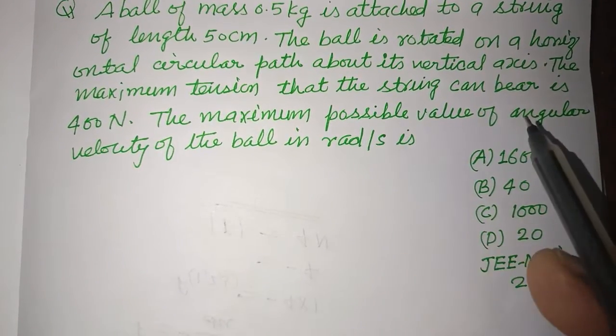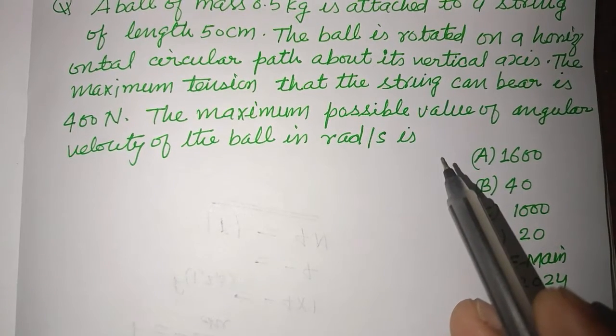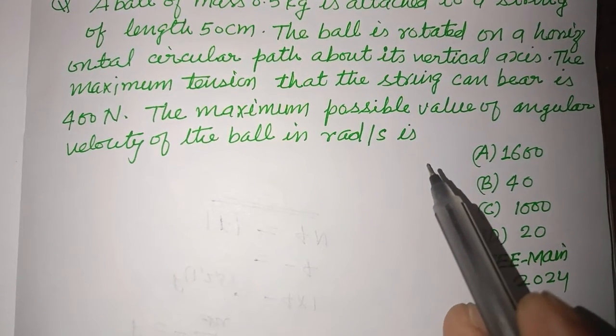The maximum tension that the string can bear is 400 N. The maximum possible value of angular velocity of the ball in radian per second is?